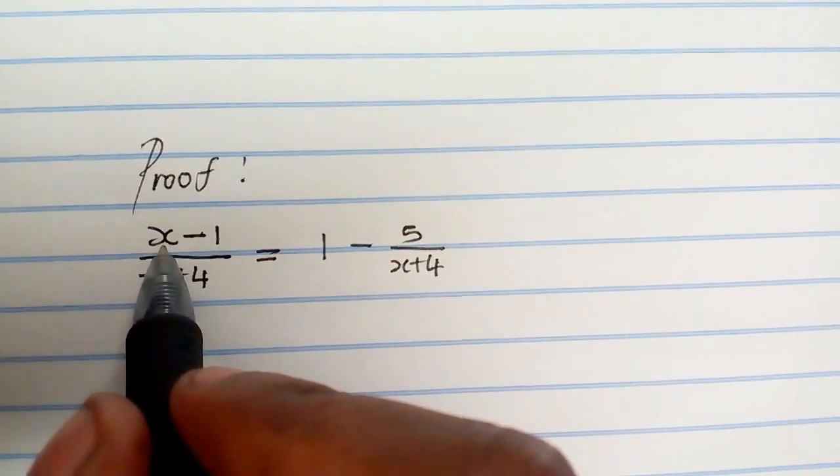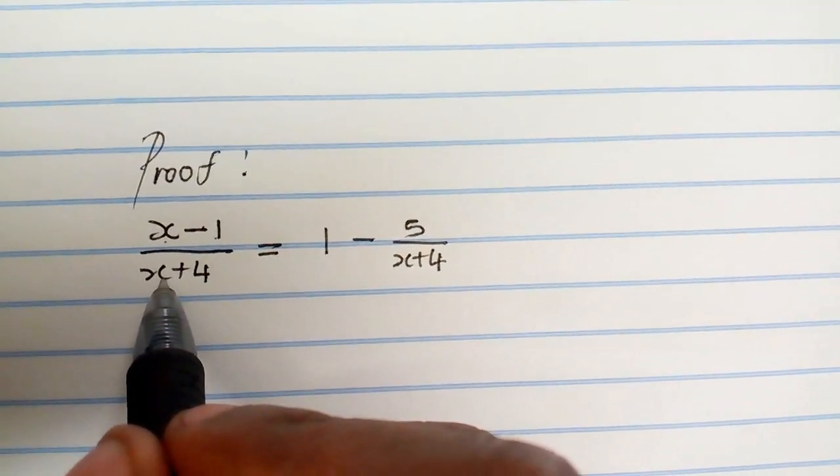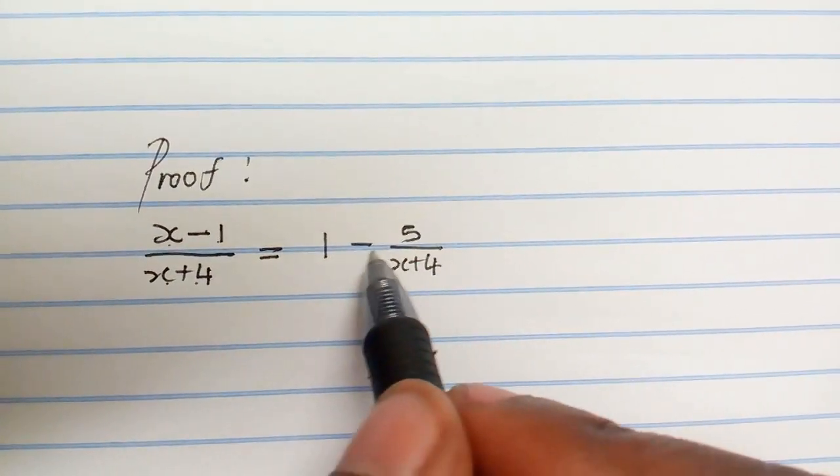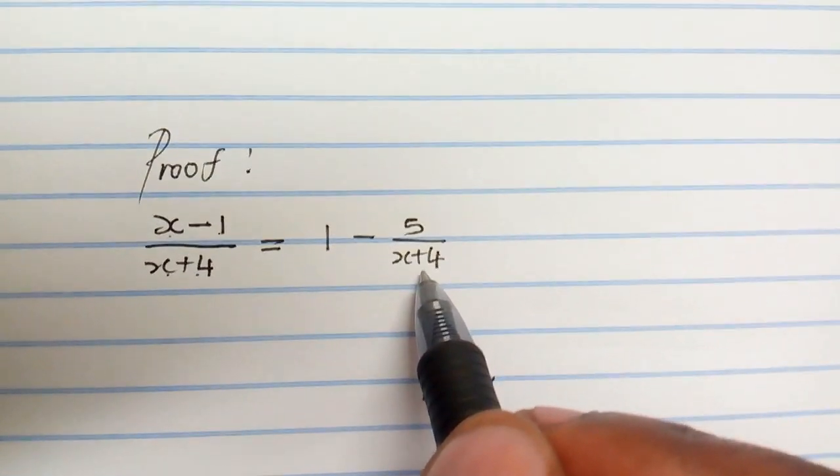Okay, the question is proof that x minus 1 all over x plus 4 equals to 1 minus 5 all over x plus 4.